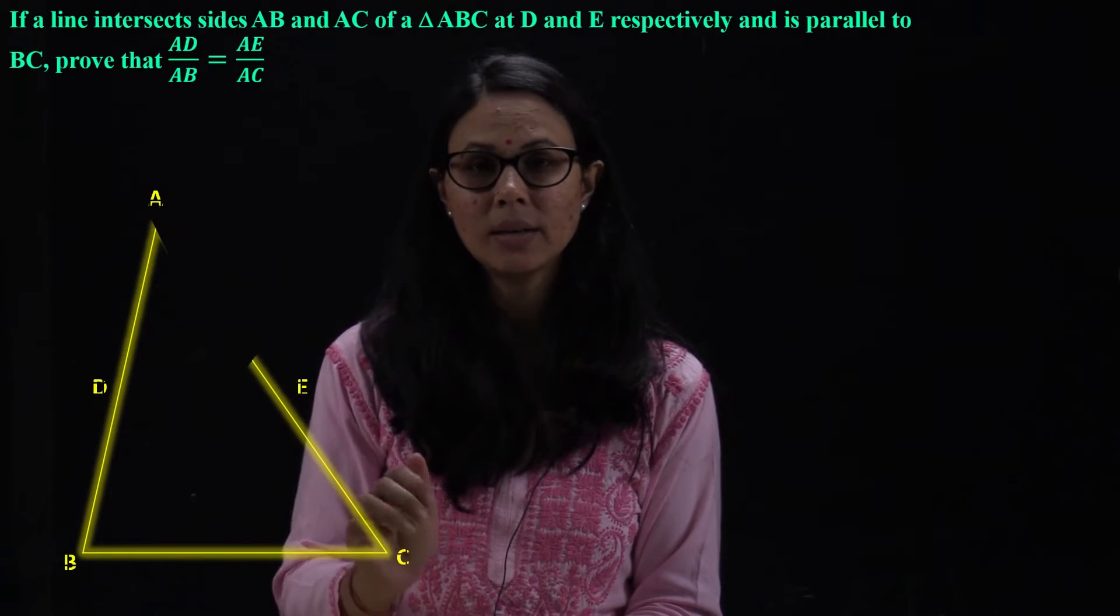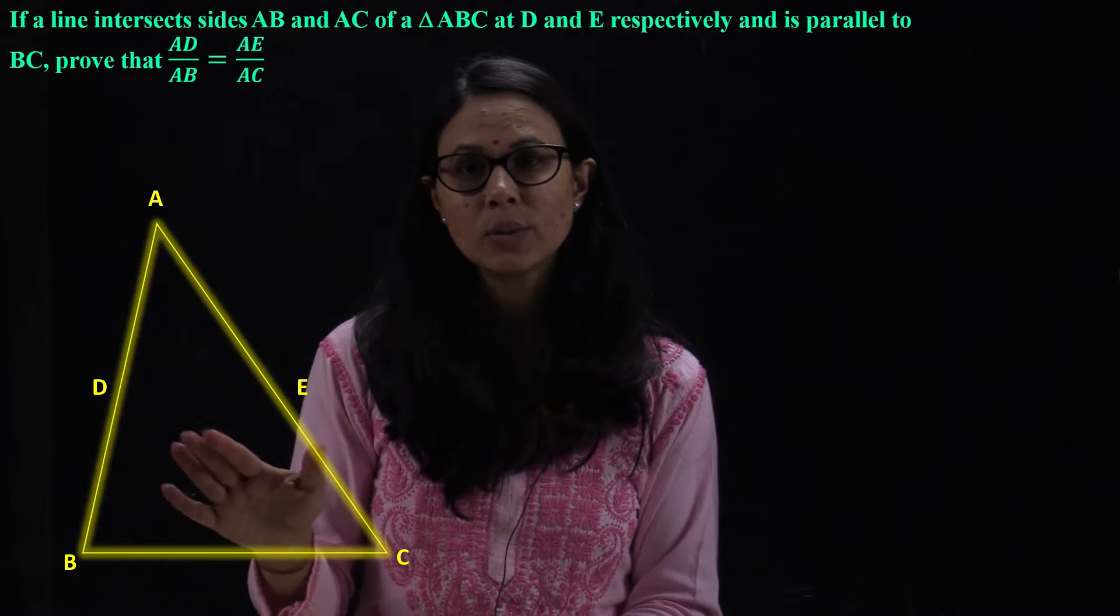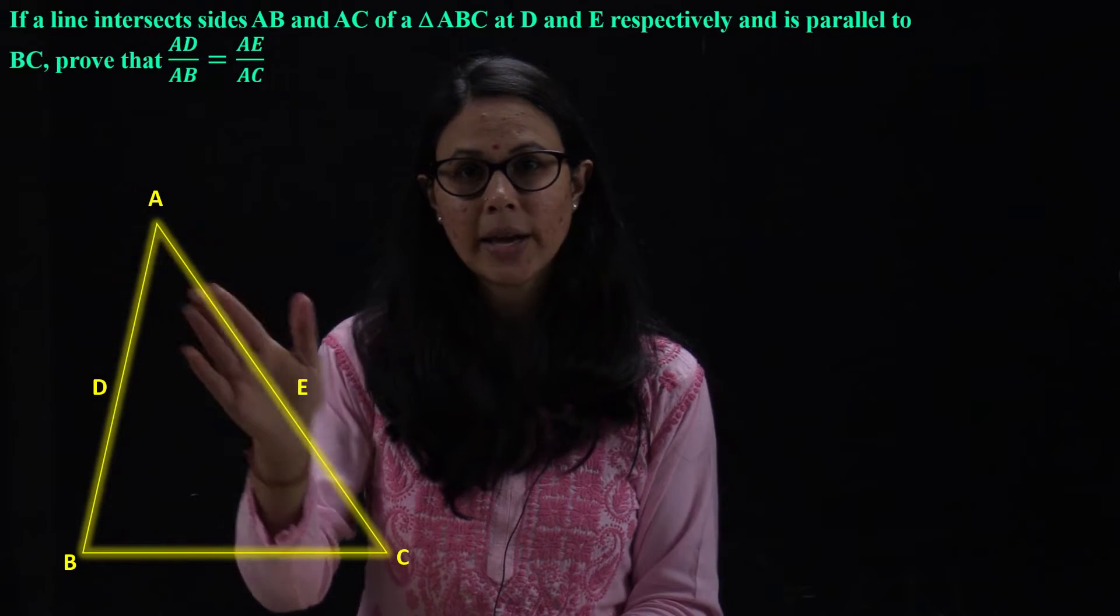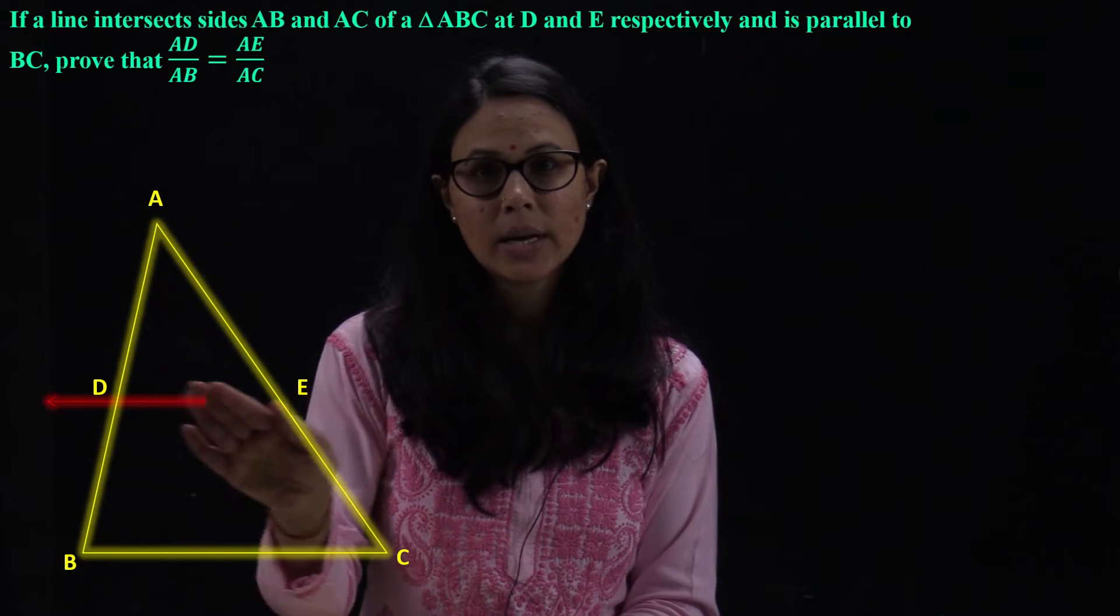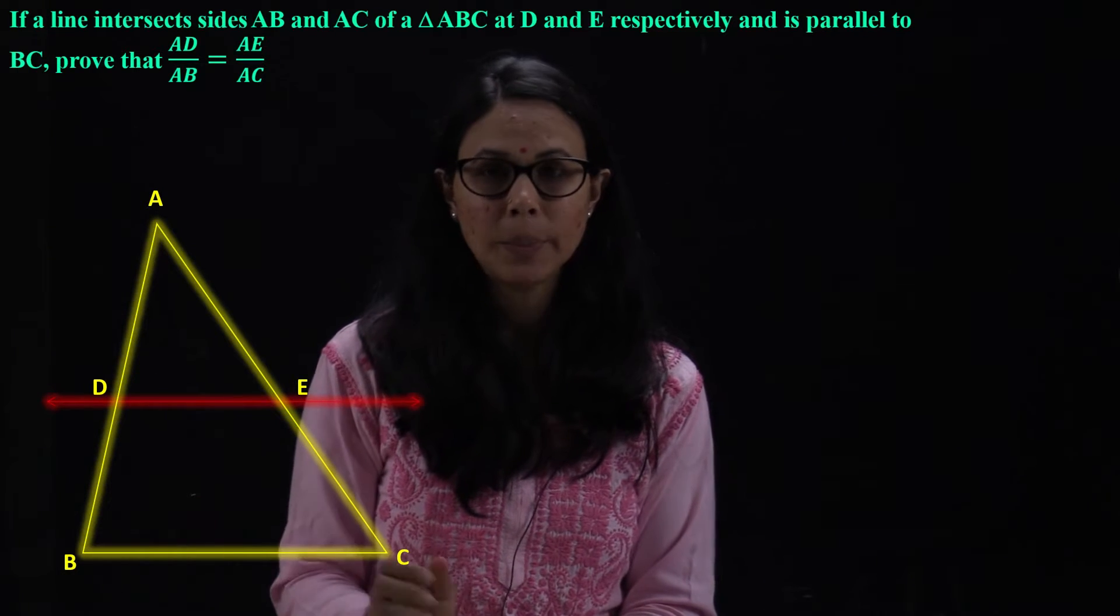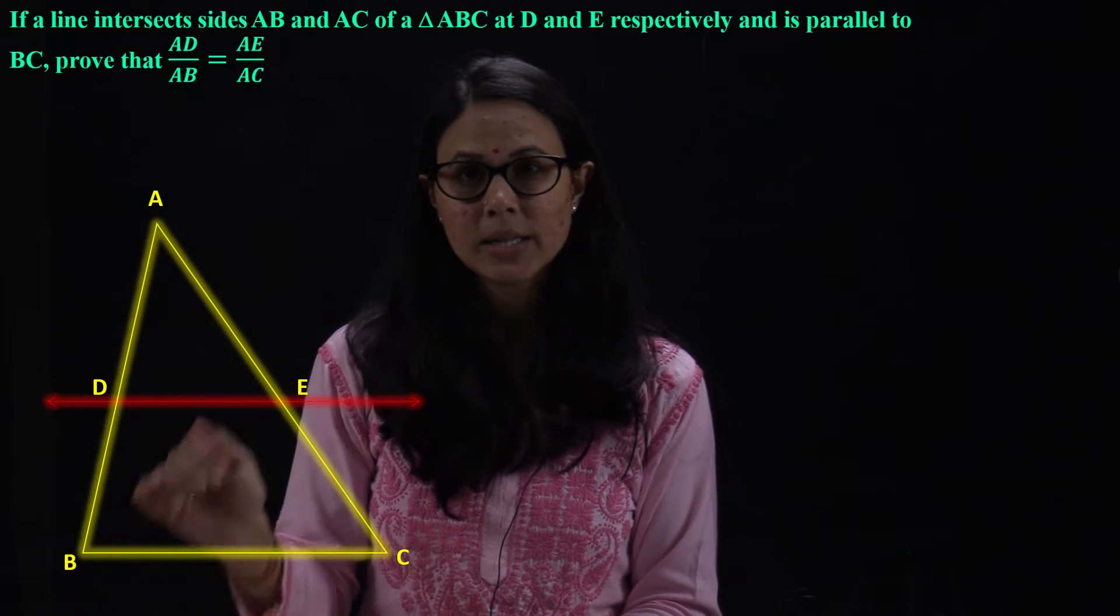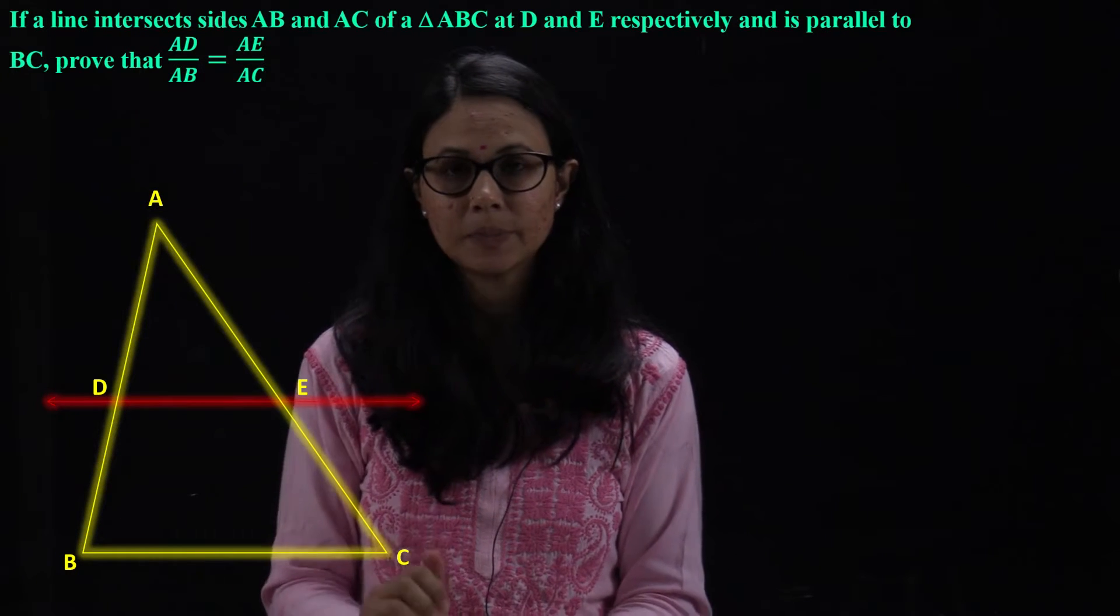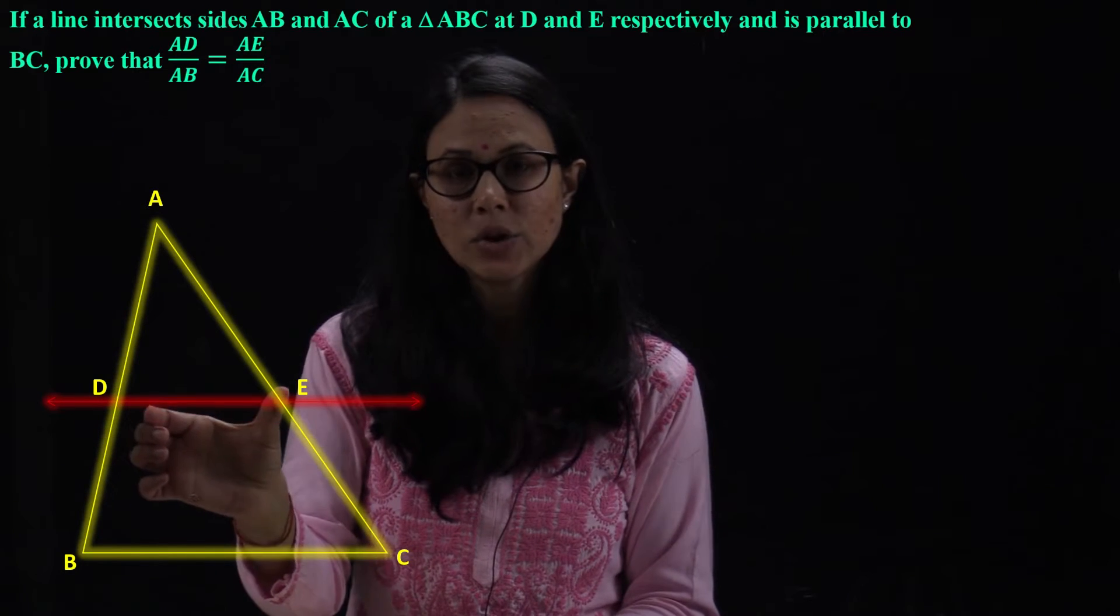A triangle ABC is given. There is a line that intersects triangle AB and AC side at D and E points. We have to prove that AD upon AB is equal to AE upon AC. First of all, if a line is parallel to BC,